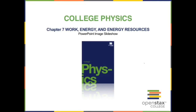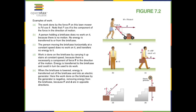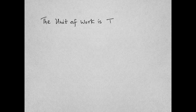Welcome to this chapter on work and energy. If a force is being applied in a particular direction to move a lawnmower, and the distance is in another direction, and the angle between the force and the distance is theta, then work is calculated as force multiplied by distance multiplied by cosine theta. The unit of work is a joule, which is Newton multiplied by meter.